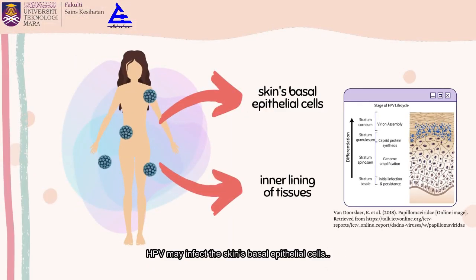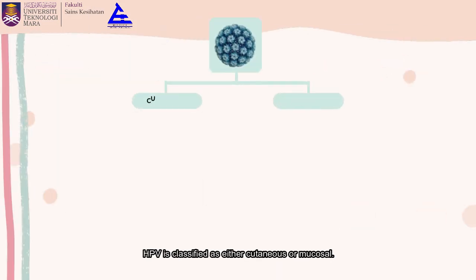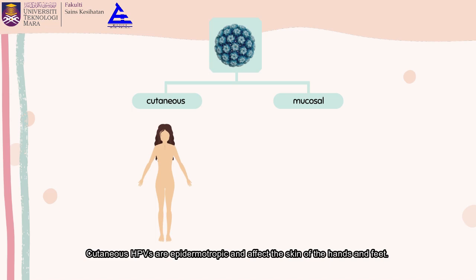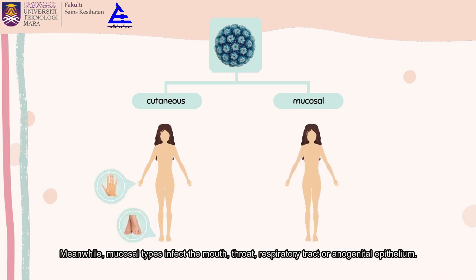HPV may infect the skin's basal epithelial cells as well as the inner lining of tissues. HPV is classified as either cutaneous or mucosal. Cutaneous HPVs are epidermotrophic and affect the skin of the hands and feet. Meanwhile, mucosal types infect the mouth, throat, respiratory tract, or anogenital epithelium.